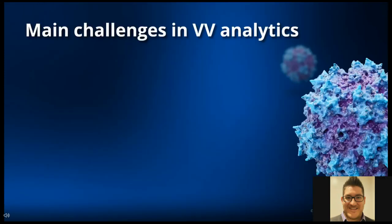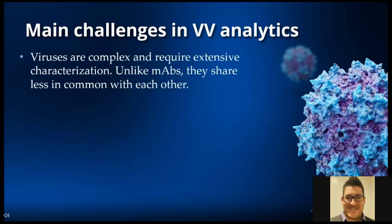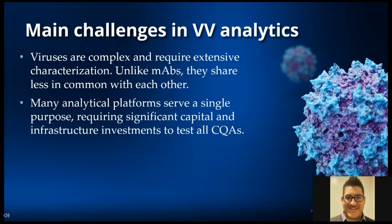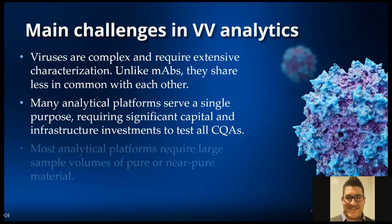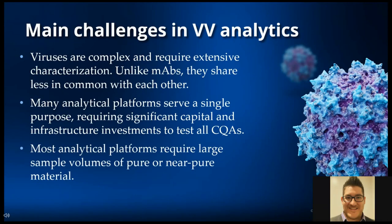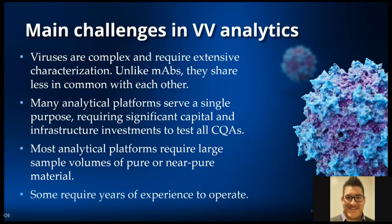There are several challenges associated with analyzing viral vectors. First, viruses are complex and require extensive characterization. Unlike monoclonal antibodies, viruses contain both a protein and a genetic component, and share less in common with each other, requiring independent methods for each virus. Many analytical platforms serve a single purpose, requiring significant capital and infrastructure investments. Most platforms require large sample volumes of pure or near-pure material, making method development challenging. Some platforms require years of experience to operate, making them challenging to implement in QC.